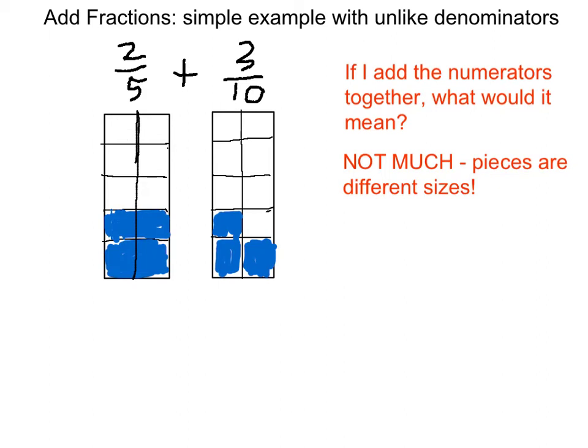By chopping the one on the left in half, I've doubled the number of pieces that I have in blue, my shaded pieces, but I've doubled my overall pieces as well. Now I have a total of 4 shaded pieces out of 10 pieces in total.